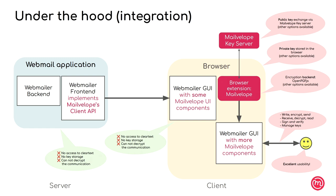The next slide shows how we integrate on a deeper level — this is what we do with the Nextcloud Mail app as well as with Roundcube. Here Maevelob provides a client API that the webmailer can implement, and the webmailer can then use UI components that we provide. This gives better usability and more features compared to the basic integration.